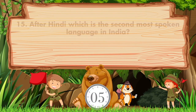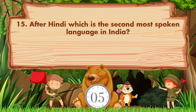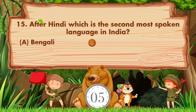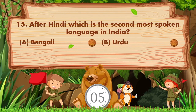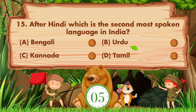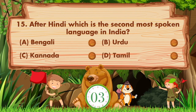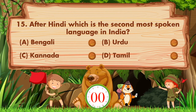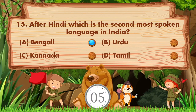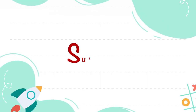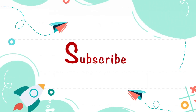After Hindi, which is the second most spoken language in India? Option A is Bengali, B is Urdu, C is Kannada, D is Tamil. The answer is option A, Bengali.